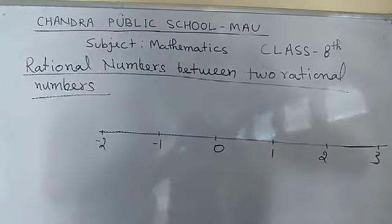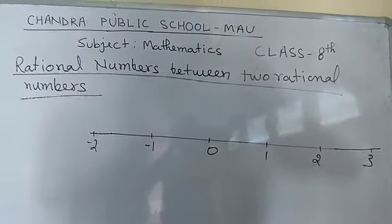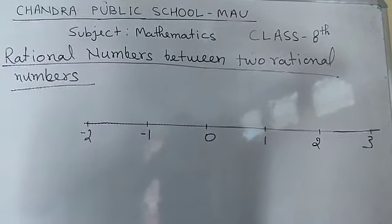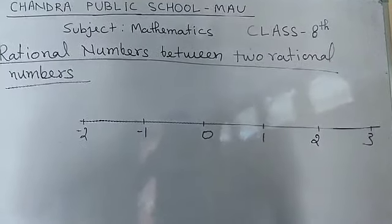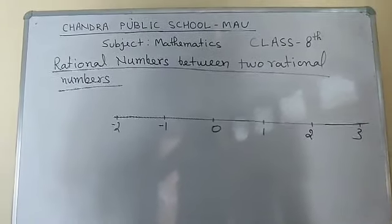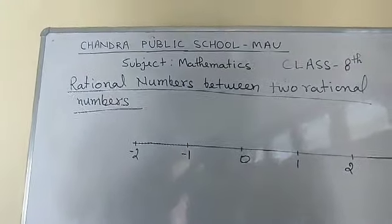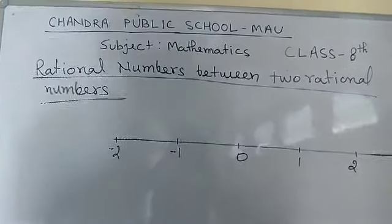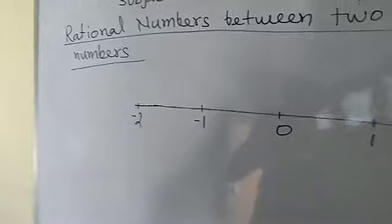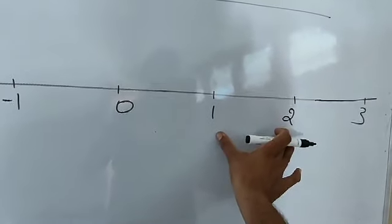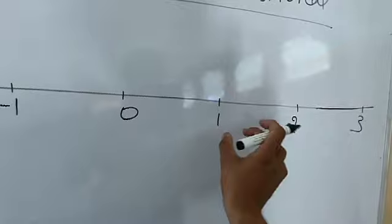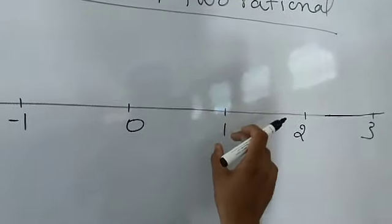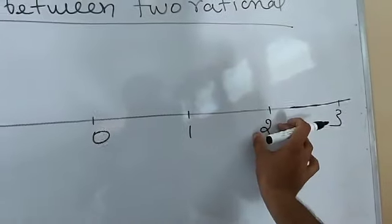Our next topic is rational numbers between two rational numbers. If you are asked to write the rational numbers between any two rational numbers, I will explain how to find them. First, you can find infinitely many rational numbers between any two rational numbers. For example, find the rational numbers between 1 and 2, meaning a number greater than 1 and less than 2.